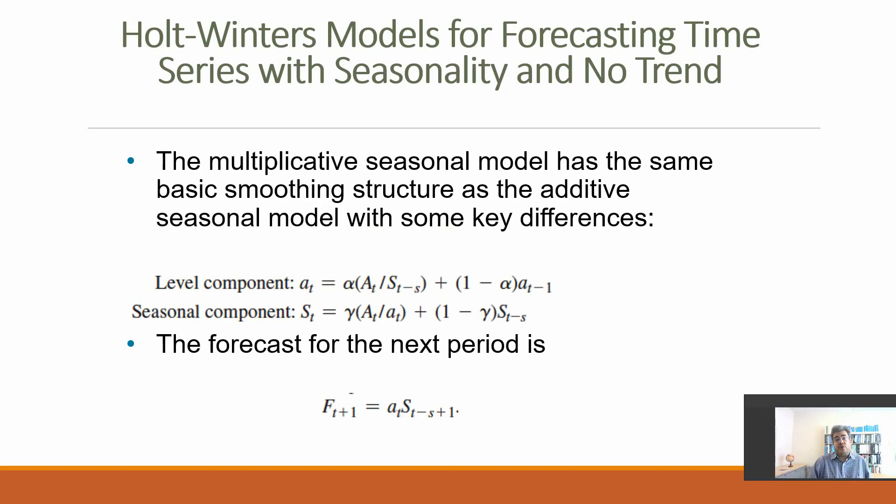We work with two components: the level component At and seasonal component St. The level component At equals alpha multiplied by the actual T divided by the seasonality St minus S. We don't need to know St in advance because we use an old St, plus 1 minus alpha, like in any exponential smoothing approach, multiplied by At minus 1, the previous At.